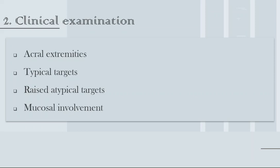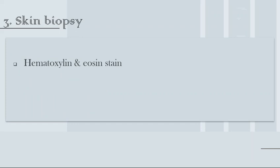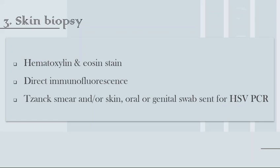During examination, I will perform ocular and extremity examination and look for typical target or targetoid lesions. We may find two different lesion types in the same patient, and assess mucosal involvement and its location. A skin biopsy done with hematoxylin and eosin stain may be needed, as well as direct immunofluorescence. A Tzanck smear, and an oral, skin, or genital swab sent for herpes simplex virus PCR may also be required.